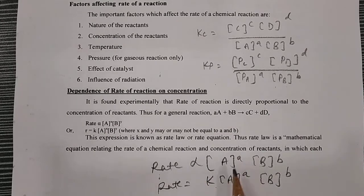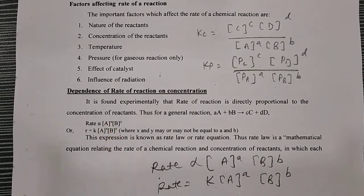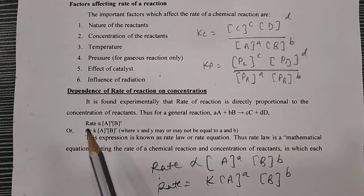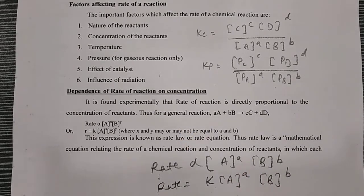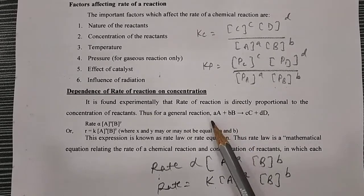Rate is proportional to [A] to the power a, [B] to the power b. Or, rate = k[A]^a [B]^b. For a generalized equation aA + bB → cC + dD, where small a and small b are the coefficients or number of moles of reactant, and small c and small d are the coefficients or number of moles of product. Capital A and B are the reactants; capital C and D are the products.